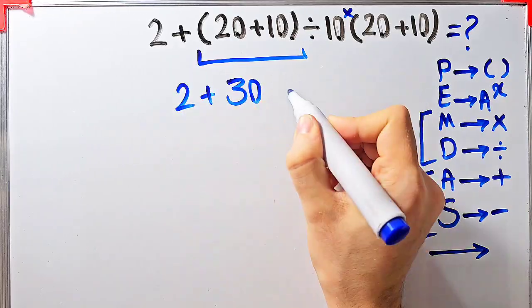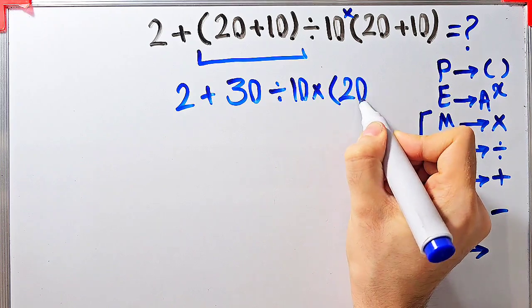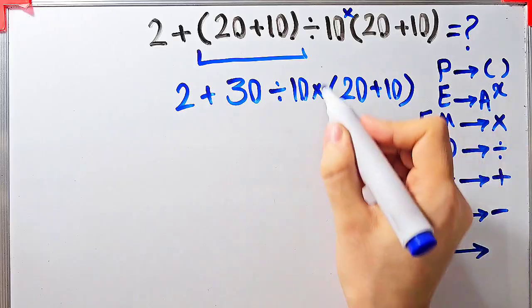Now the question is 2 plus 30 divided by 10, then times open parentheses 20 plus 10 closed parentheses. Now we have addition, division, multiplication and parentheses.